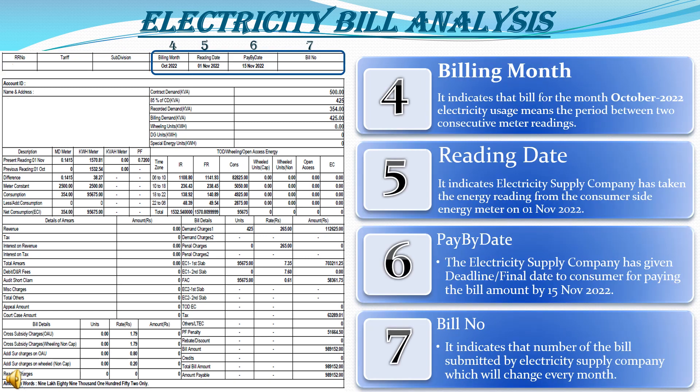Billing month indicates the bill for the month of October 2022 — the electricity usage period between two consecutive meter readings. Every month we receive a bill mentioned in the billing month. The reading date indicates that the electricity supply company took the energy reading from the consumer's energy meter on 1st November 2022, which is the billing month of October 2022. The pay-by date is the deadline given to the consumer for paying the bill — 15th November 2022. Otherwise, they will add a penalty.